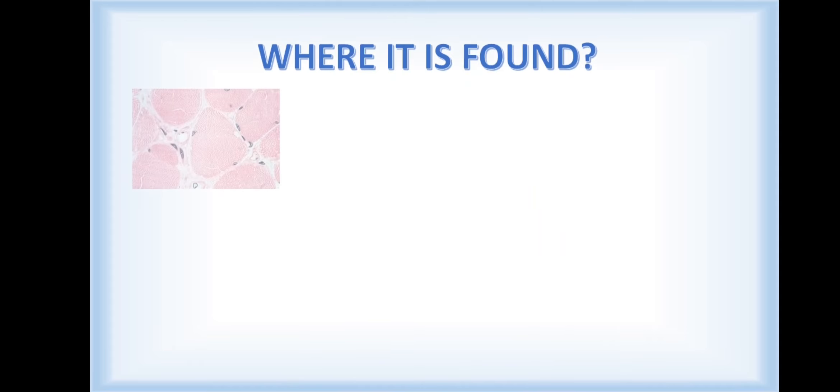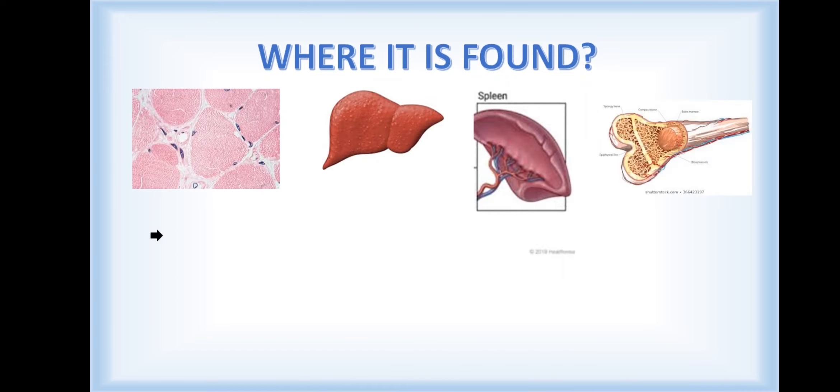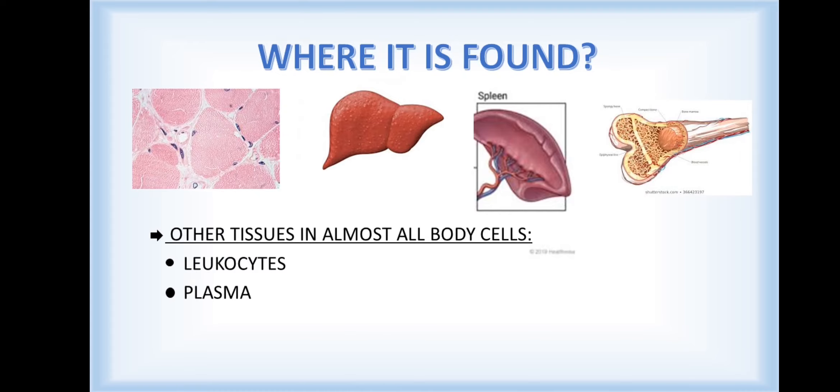Ferritin is present in high concentrations in the liver, spleen, bone marrow, and skeletal muscle. But it has also been identified in many other tissues and almost all body cells, including leukocytes, plasma, and even neoplastic tissues as a tumor marker.